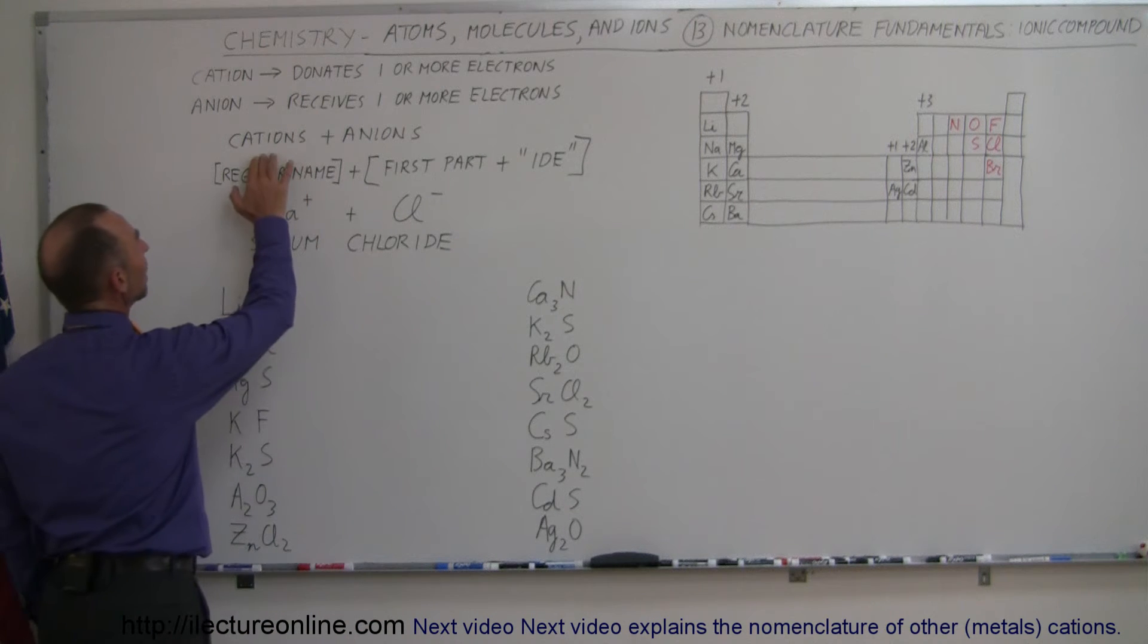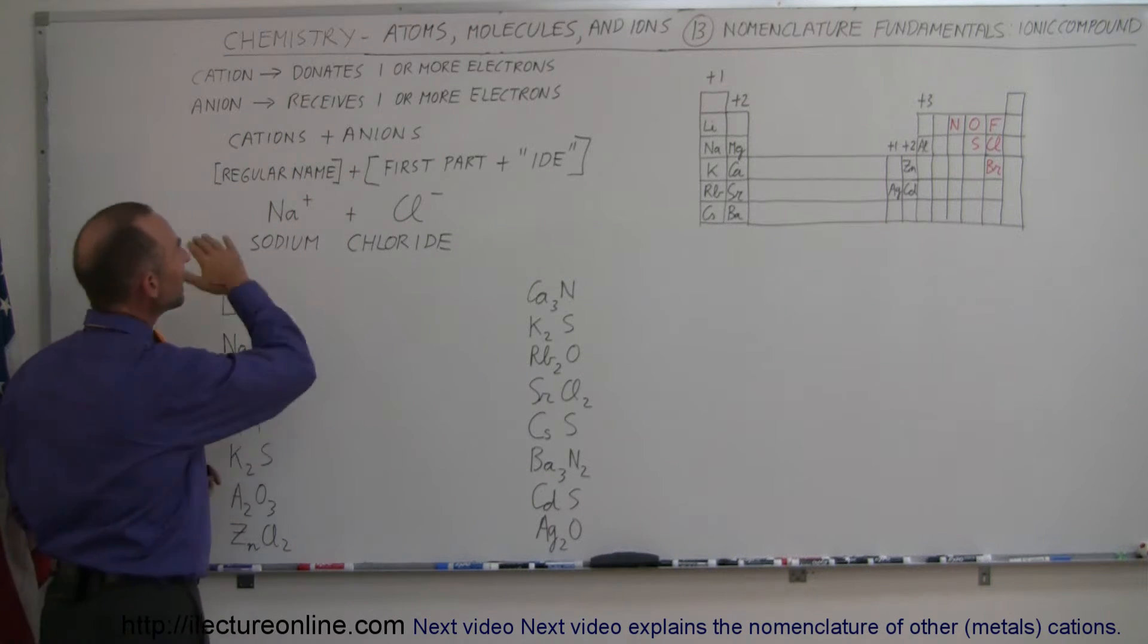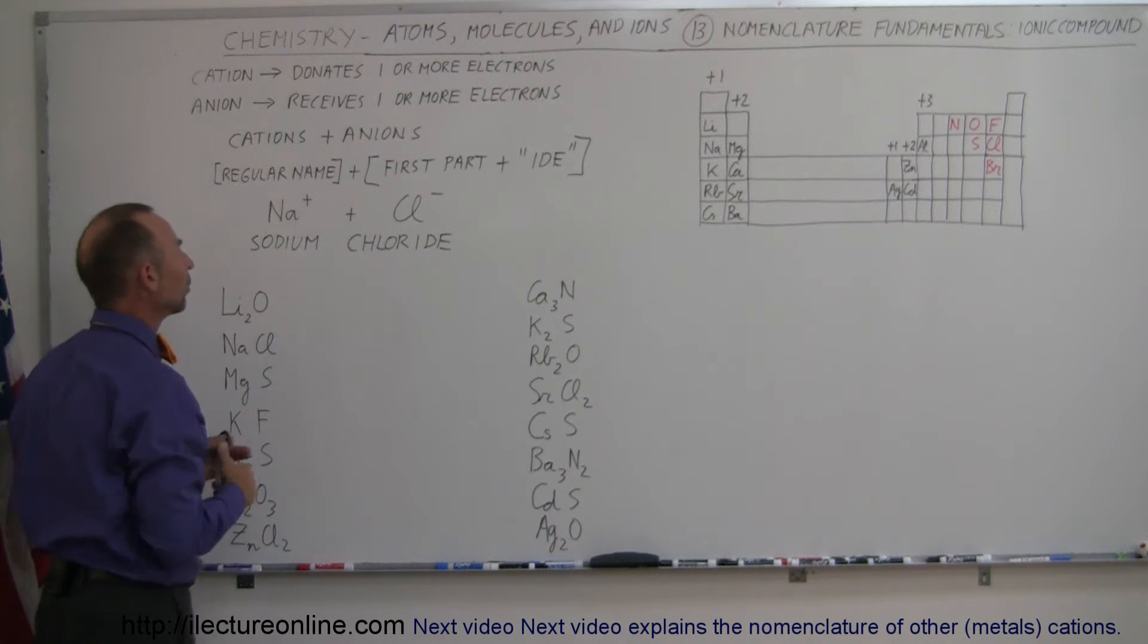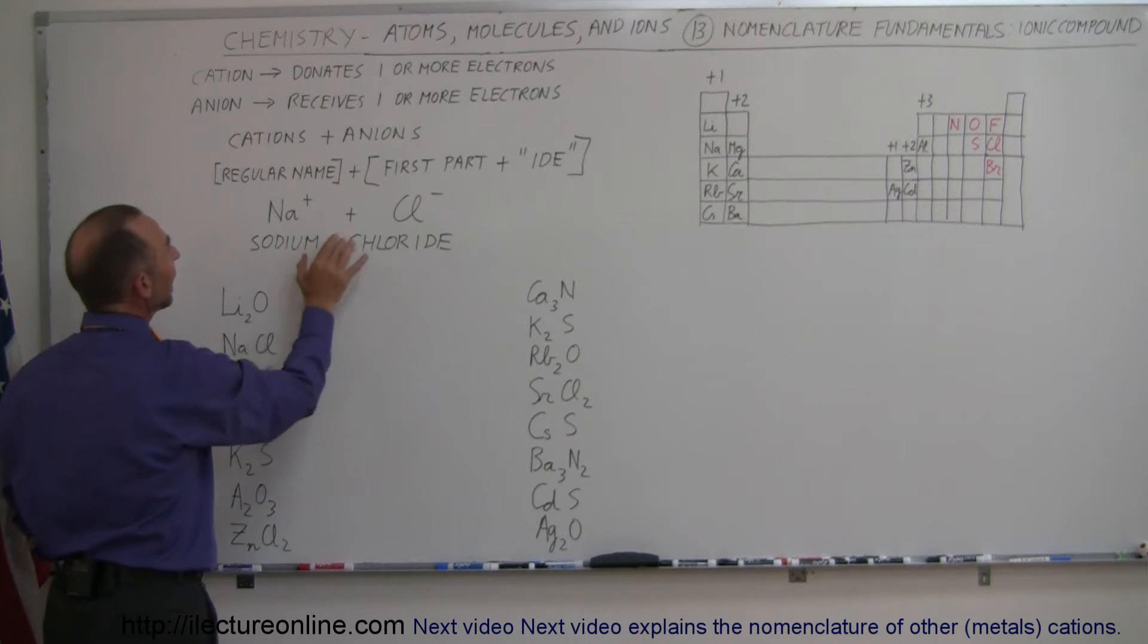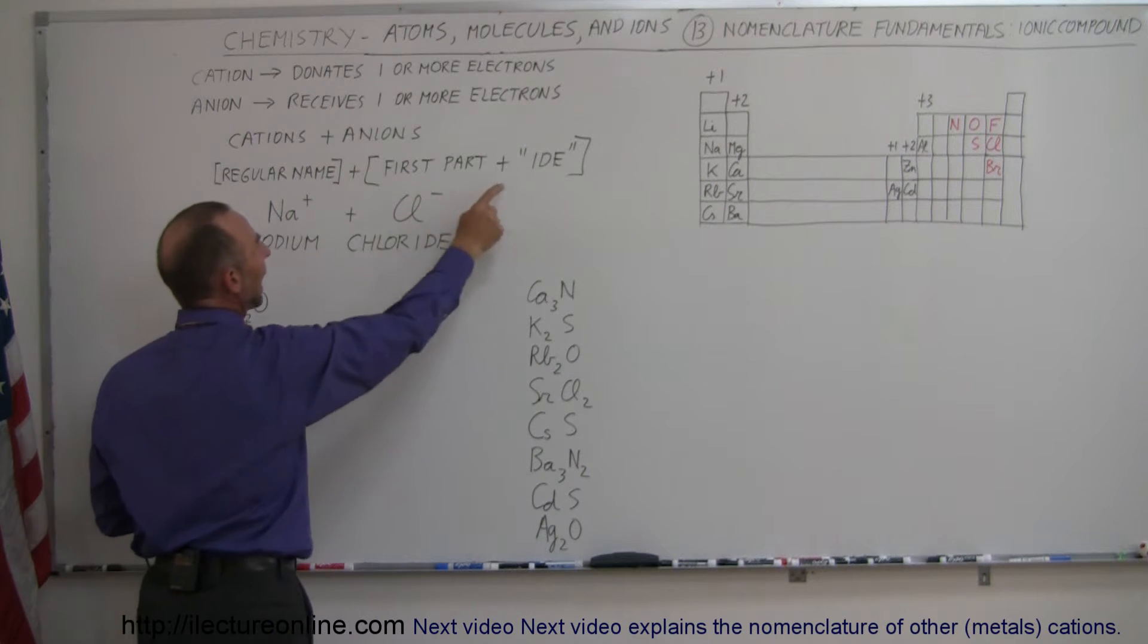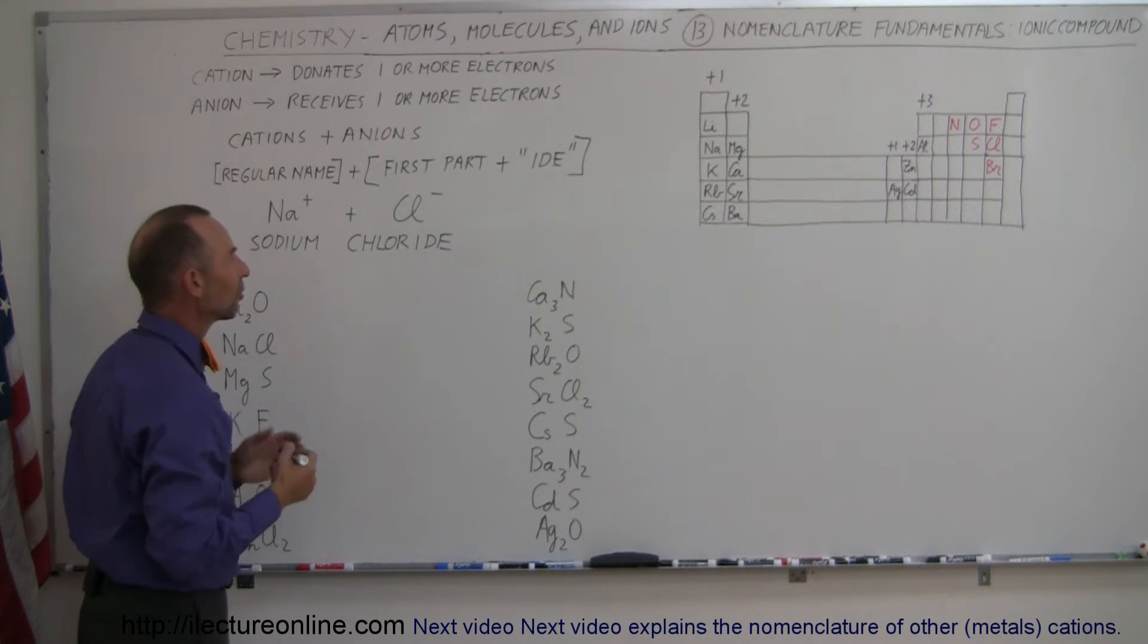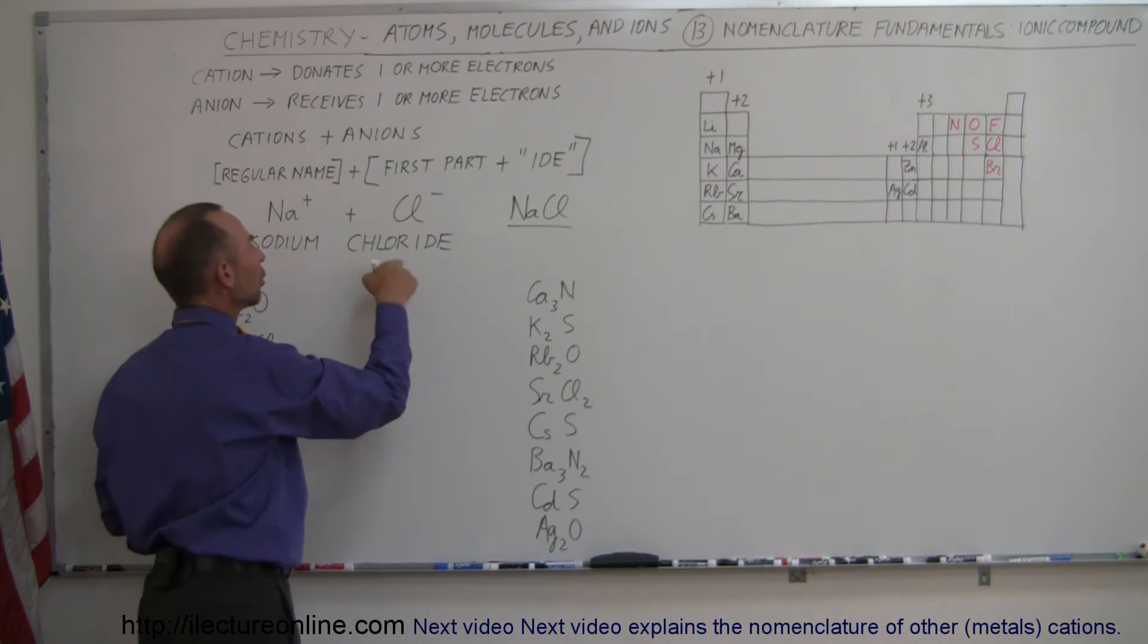Typically then a cation will bond with an anion because of the electrical attraction. When we name those things that are bonded together, we use the first name as the regular name of that particular ion or the way it was as an atom. For example, sodium, which is now a sodium ion, is still called sodium. And then the second ion, which is an anion, we're just going to take the first part of the normal name and add 'ide' to it at the end. So chlorine becomes chloride, and this becomes sodium chloride. When we write that together as a single molecule, this becomes NaCl, named as sodium chloride.